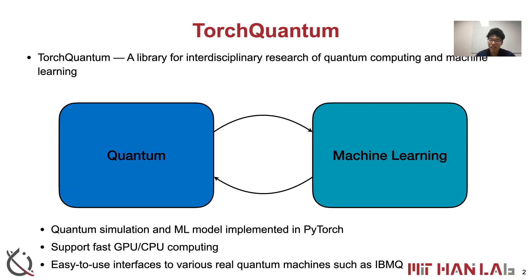Torch Quantum is a library for the interdisciplinary research of quantum computing and machine learning. Most of the quantum simulation and machine learning models are implemented with native operations of PyTorch. It supports fast processing on GPUs and CPUs, and also provides easy-to-use interfaces to various real quantum machines such as IBM quantum computers.